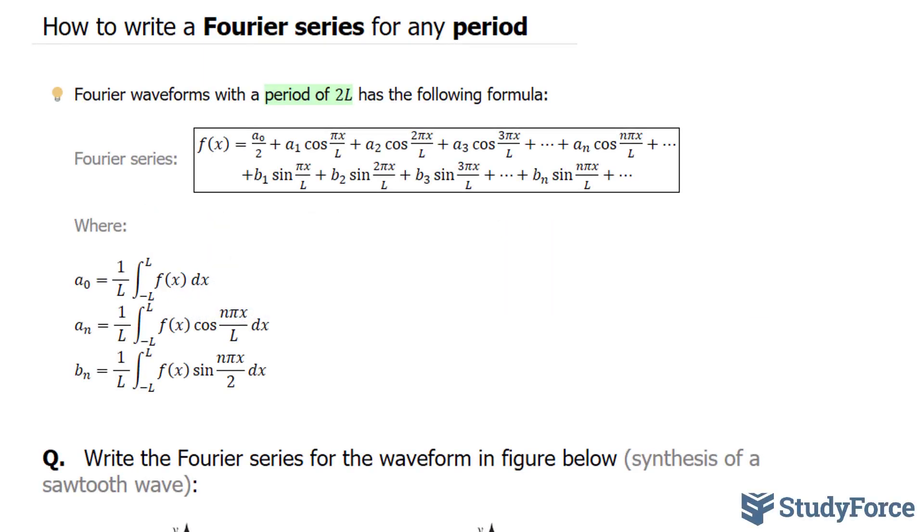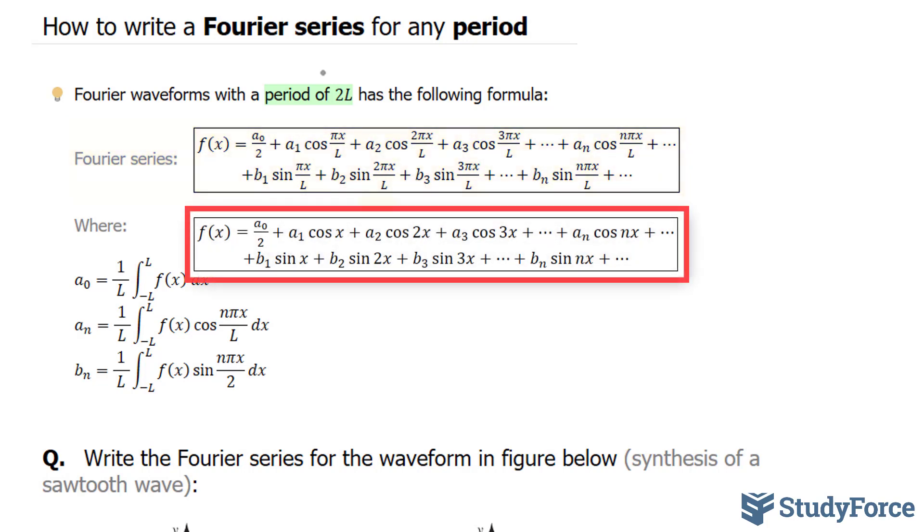In this tutorial, I'll show you how to write a Fourier series for any period. Now, in one of our previous videos, we looked at how to write a Fourier series for when the period is 2π. What's interesting is that a Fourier waveform with a period of 2L, this is just a general form, has the following formula, and this is modified from what we saw in the previous video.